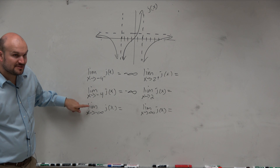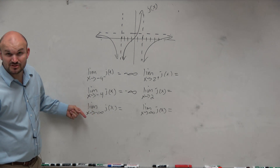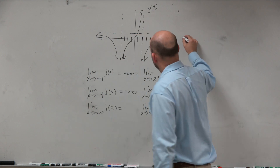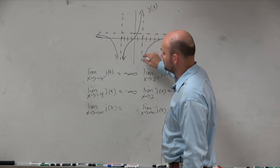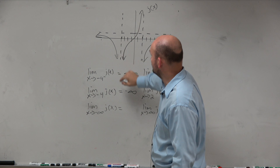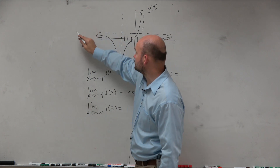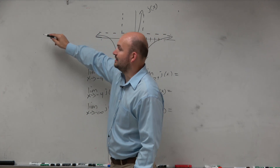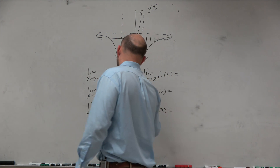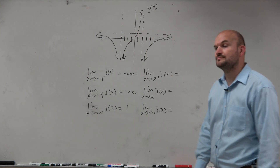What about as x approaches negative infinity? As x approaches negative infinity, you can see there's an infinite discontinuity. Then we get closer and closer to this asymptote, which looks like it's located at 1. So you could just say the values are approaching 1.